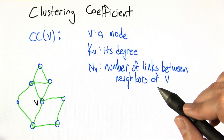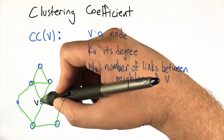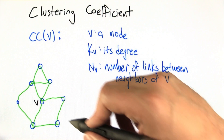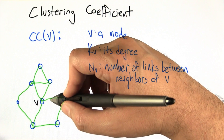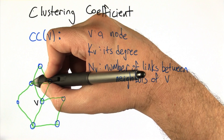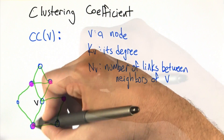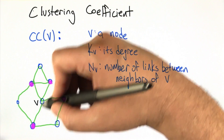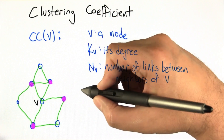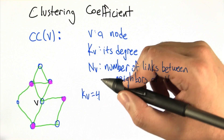Let's look at this example graph to ground out some of these concepts. Here we've got a graph — let's call this node v. Let's take a look at the neighbors of v: those are the nodes that are directly connected to v in the graph. We've got this one, this one, this one, and this one. So the number of those neighbors is exactly the degree of v, which in this case is 4.